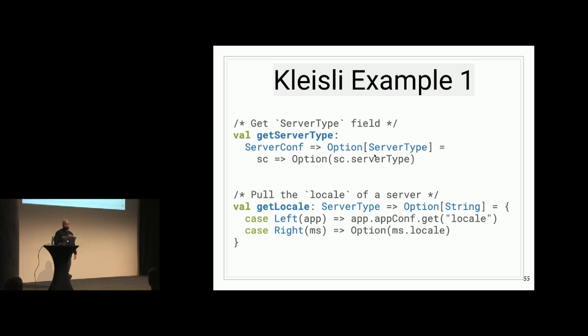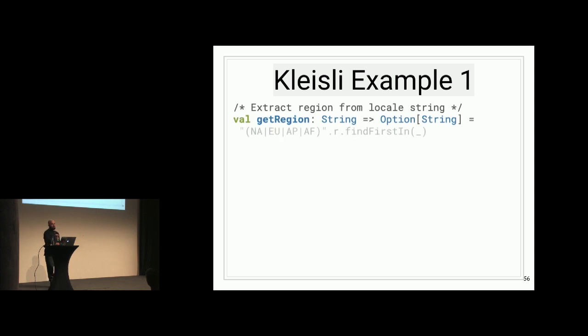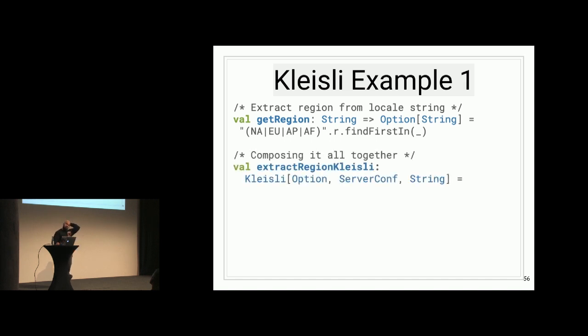So we build a config extractor for region. It has no guarantees about fields being there. And we have multiple levels of option available to us, right? And there's a different substructure underneath app and microservice that we'll deal with. So we want extract region from server conf all the way down to option of string. So I have a getter for the server type field that says, you know, given some server conf, lift the server type field into option. This is to get around the Java nullability. And then we have a function that pulls the locale of a server. So given some server type, we pattern match on left and right. We have an app and a microservice here. And then app.conf, we call the map get on locale. And then in the other case, we just put locale in an option. So we have, again, two Kleisli arrows, right?